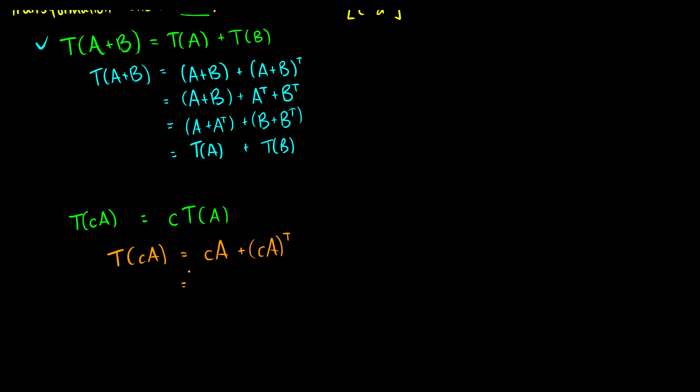Okay well we just keep CA the same. We do the transpose so we can factor out the C and then have A transpose. Then we can factor out the C for both of these and we'll be left with A times A transpose. And this is just the same thing as C times the transformation of A.